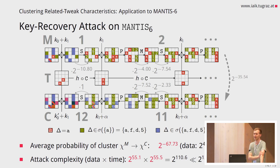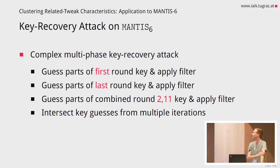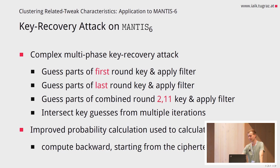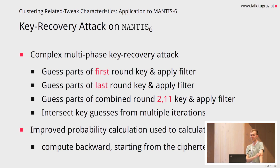This key recovery attack is done in multiple phases: first we guess some parts of the first round key and apply a filter, guess parts of the last round key and apply a filter, take this combined information and guess some bits of combined round keys 2 and 11 and apply another filter, then store all key guesses and intersect guesses from multiple iterations. The detailed process can be found in the paper. We also use this probability calculation to more accurately predict how many wrong key guesses will be filtered during this key recovery attack, computing backward starting from the ciphertext.